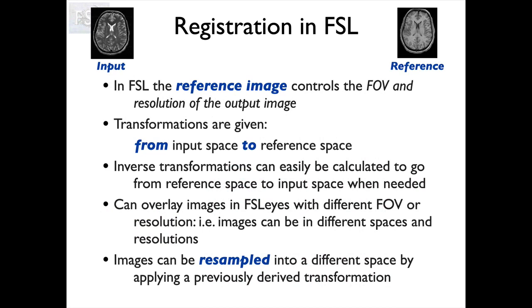When using registration within FSL, the input and reference images are treated differently. The reference image stays fixed and controls the field of view and resolution of the output image. When you have the transformed input image, it ends up the same size and resolution as your reference image, so they can be easily overlaid. Transformations are always given from input space to reference space, and we can easily get inverse transforms that go the other way around. If you'd prefer to transform the reference into input space instead, simply invert the transform and apply it.